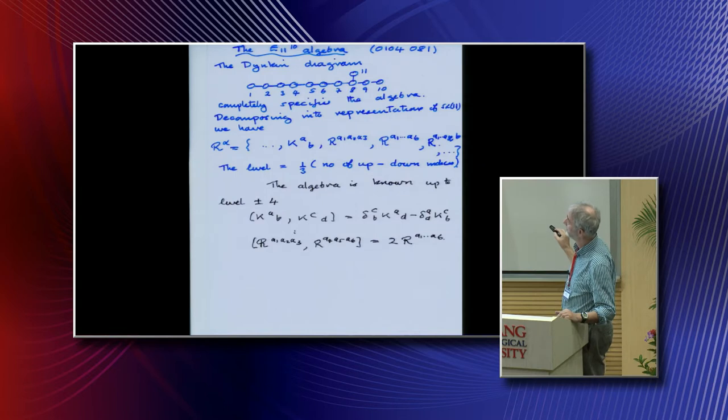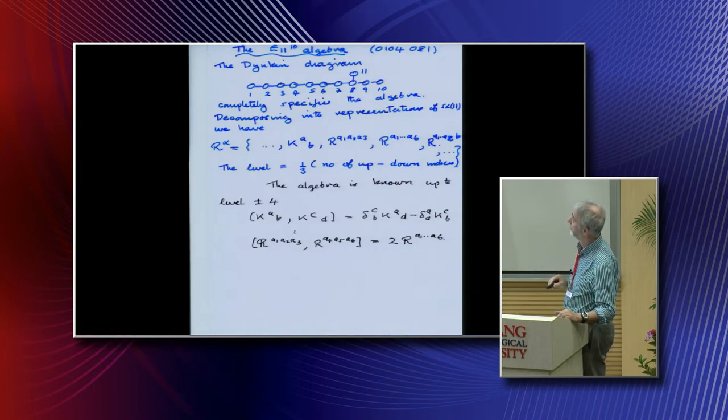What we do is, for example, here we could delete node 11, then we'd have 10 dots in a row, and this would be the algebra A10, or SL11. What we do is take E11 and we found ways to decompose it into SL11. This is like taking the three of SU3 and decomposing it into SU2. Deleting this gives SL11, and they're the generators of SL11. There's something called a level, which is preserved, which is the number of up minus down indices over three.